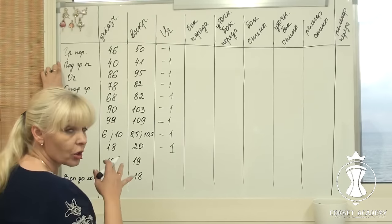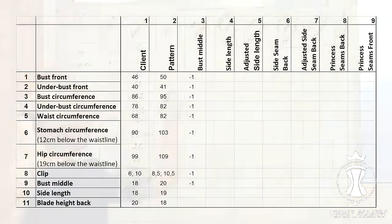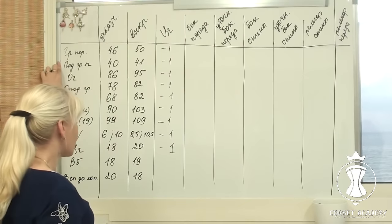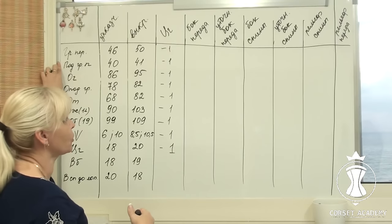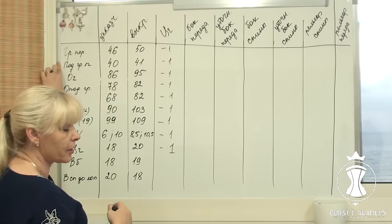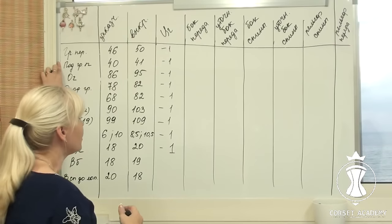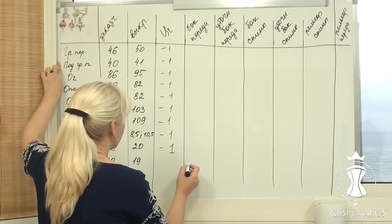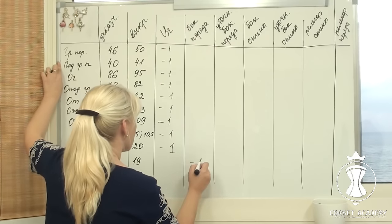I write negative 1 cm in line 9 of column 3, and also negative 1 cm in all lines of column 3 that refer to circumferences affected by this alteration. Side length: my client's measurement is 18 cm and it is 20 cm on the pattern. 18 cm minus 19 cm equals negative 1 cm. Therefore, I need to shorten the side line by 1 cm at the top. I write negative 1 cm in line 10 of column 4.